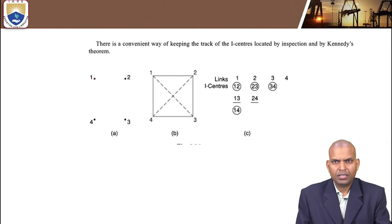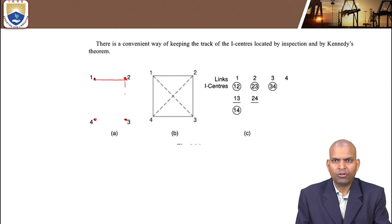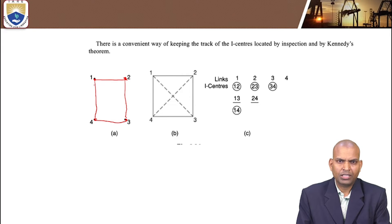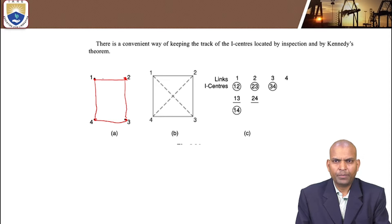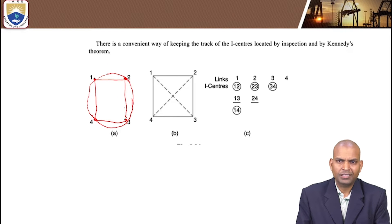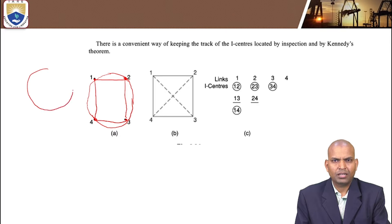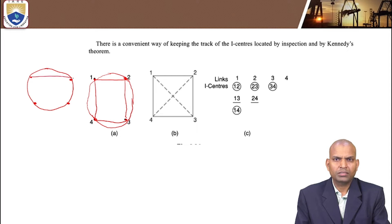Suppose there are 4 links: link 1, link 2, link 3, and link 4. We mark them, either in a rectangle or square, and join all the links because they are connected to each other — link 1 to 2, 2 to 3, 3 to 4, and 4 back to 1, forming a closed chain. Some books denote this with a circle, marking the number of links — 1, 2, 3, 4 — on the circle.